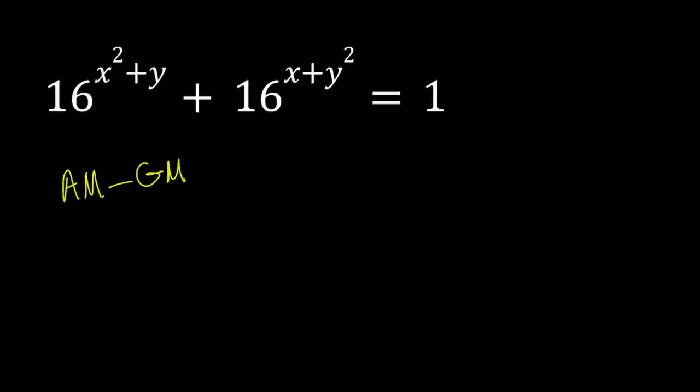So AM-GM inequality works like this. If you have two numbers that are positive, and in this case, 16 to the power of something is always going to be positive, right? You can take their arithmetic mean, which is the average, and then geometric mean. And their arithmetic mean is always going to be greater than or equal to their geometric mean. So for two numbers like A and B, we can write this as A plus B over 2 is always greater than or equal to the square root of AB.